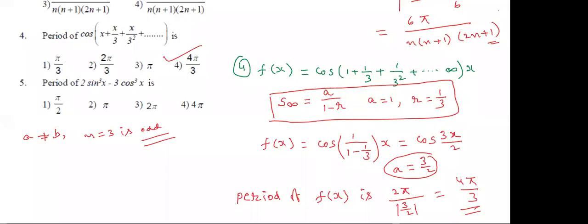A is not equal to B; 2 is not equal to minus 3, and n equals 3, which is odd. Then what is the period of the function? Using shortcut formulae, it is 2π.